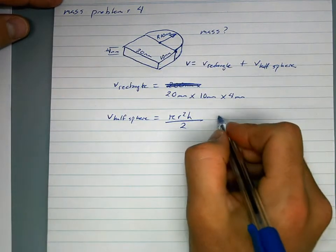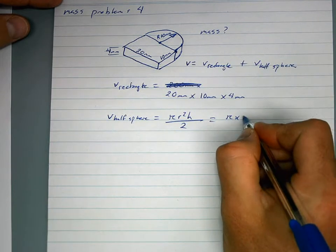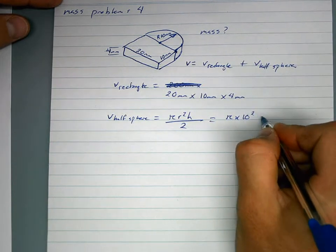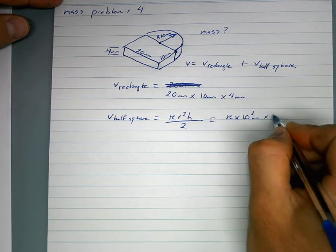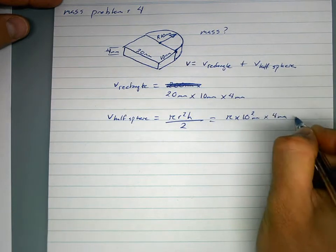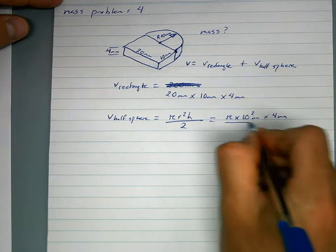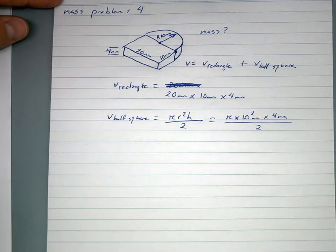So that is equal to pi times, the radius is 10, squared, millimeters, times the thickness is 4mm, over 2. So you've got to add them two together.